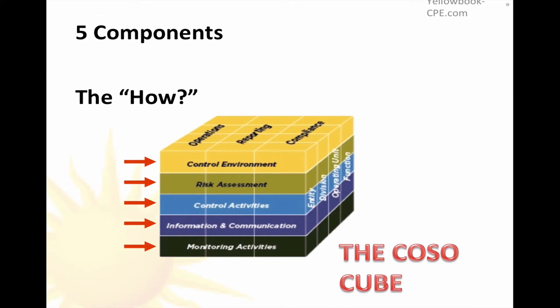Have you seen this model before? This is called the COSO Cube. I'll explain who COSO is here in just a few minutes. It is a model that helps us both evaluate — that's what auditors use it for — or create — that's what managers use it for — internal controls. But the FACE, and this model's been around for quite a while, since the early 90s, the FACE has always been problematic.